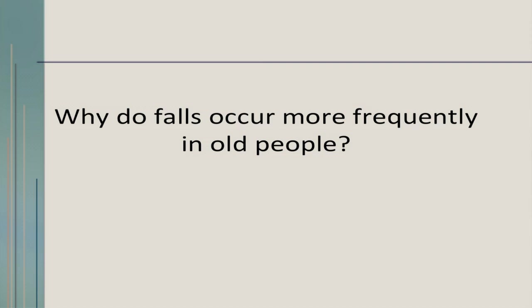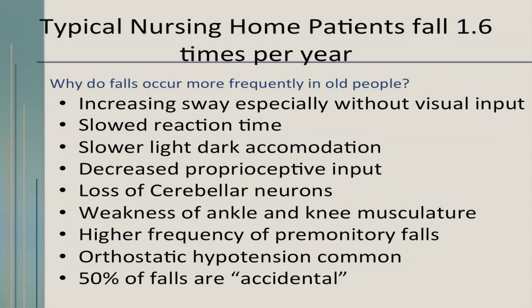Falls are the sixth leading cause of death. Half of the people who fall and have a hip fracture will be dead at one year. Why is falling more frequent in the older patient? There's increasing sway in older people without visual input, a slower reaction time so they don't recover, and slower light-dark accommodation — certain facilities are painted to provide contrast. They lose cerebellar neurons which control balance, and there's weakness of the ankle and knee musculature. Orthostatic hypotension is a factor, and 50% of falls are accidental. The consequences are quite serious, and nursing home patients have an even higher percentage of falls.